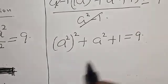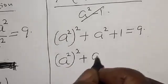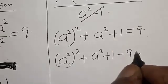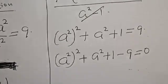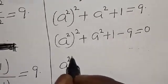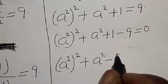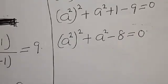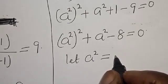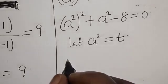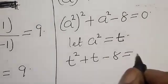Let's equate everything to 0. We have a to the fourth plus a squared plus 1 minus 9 equals 0. Then a to the fourth plus a squared minus 8 equals 0. Now let a squared equal t. Then we have t squared plus t minus 8 equals 0.